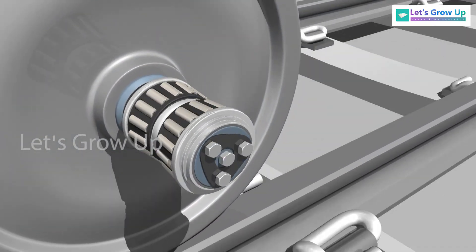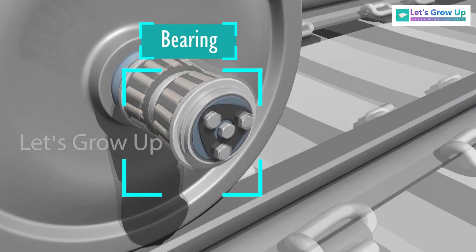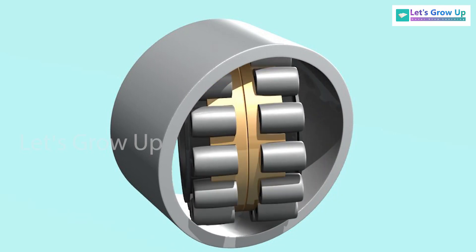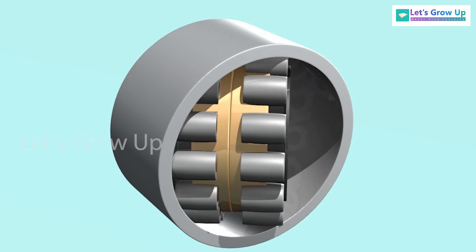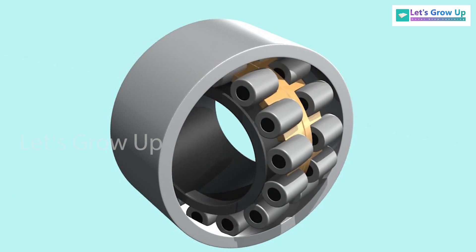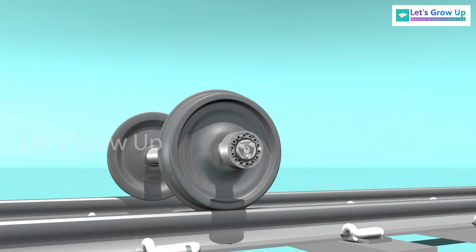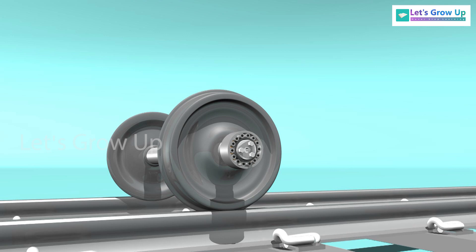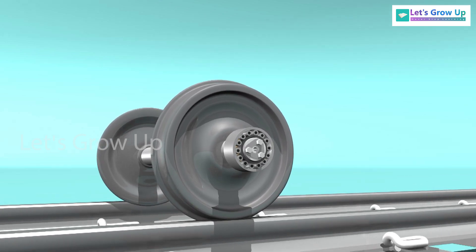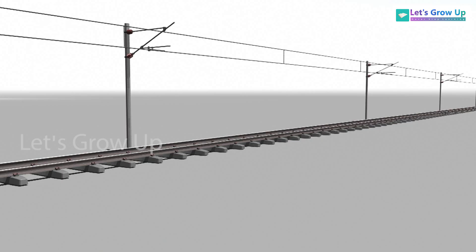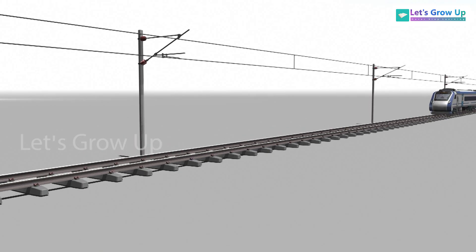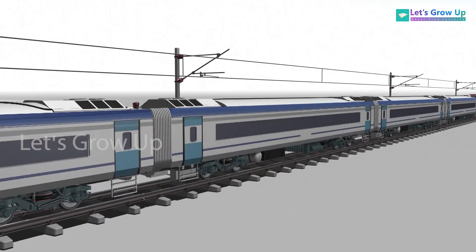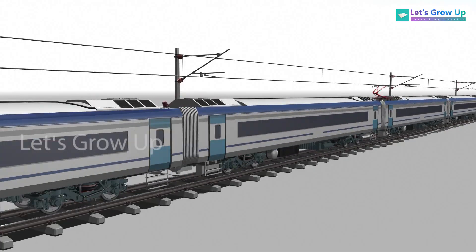To reduce friction and enable smooth acceleration, bearings are used. Bearings are components designed to facilitate smooth rotation and minimize friction between moving parts. In the context of wheels on a track, bearings are typically placed at the points where the wheel axle connects to the chassis. Bearings are used in every moving object.